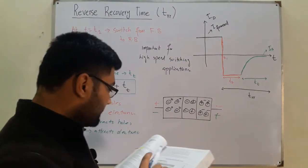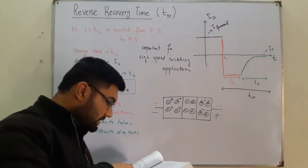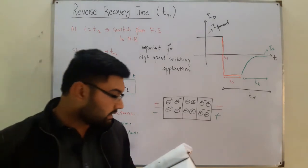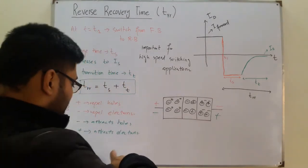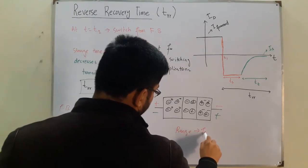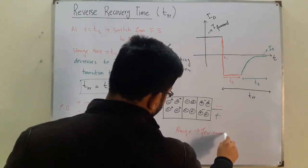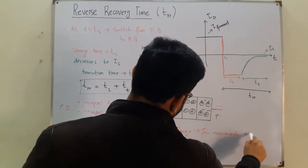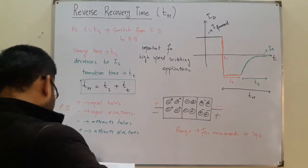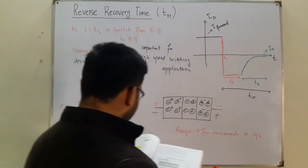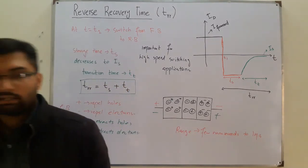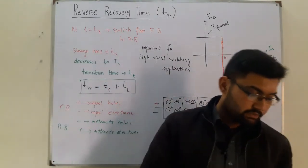The range for most commercially available diodes: TRR is in the range of a few nanoseconds to one microsecond. Diodes with only a few hundred picoseconds of recovery time are also available.